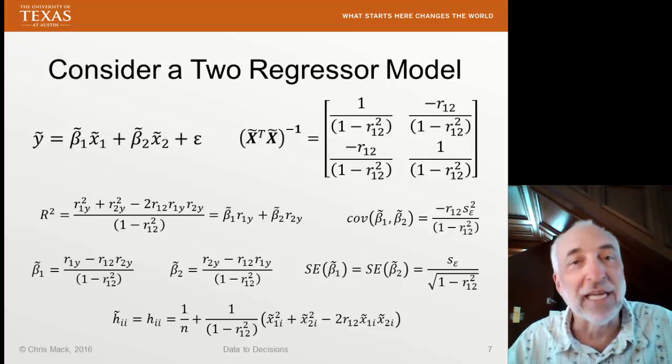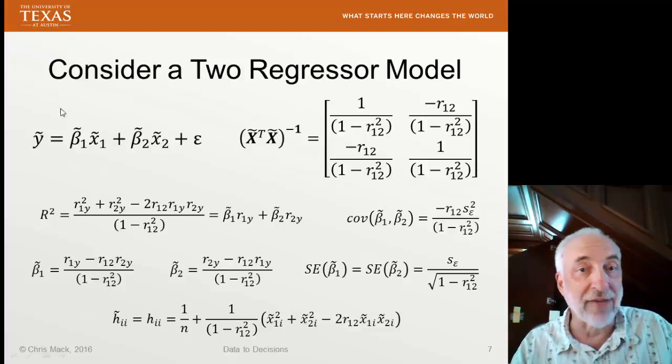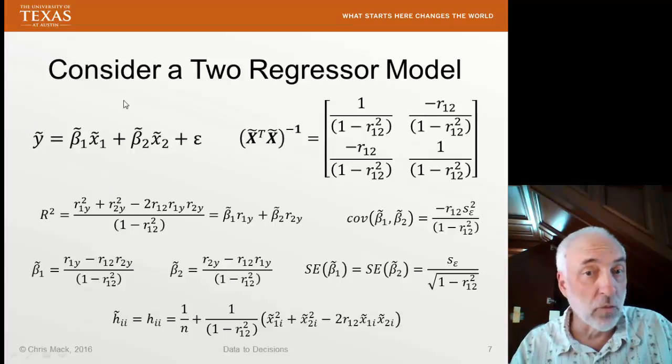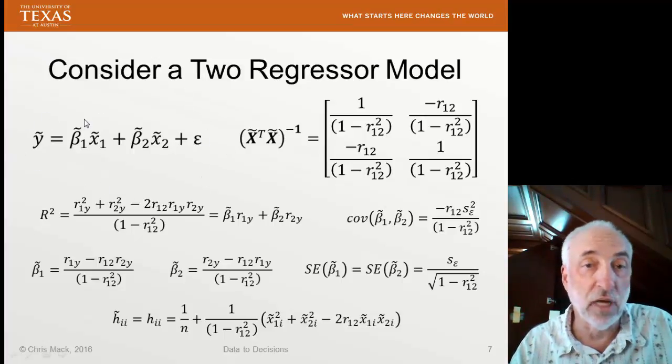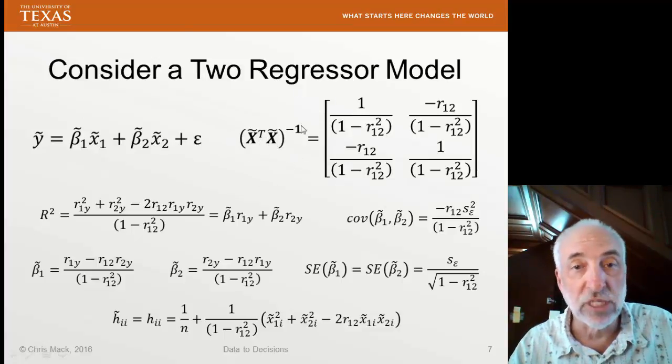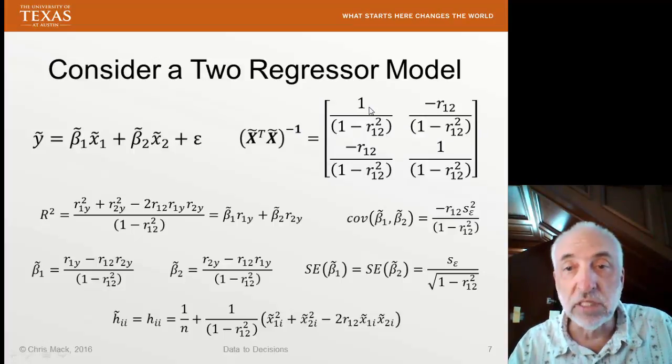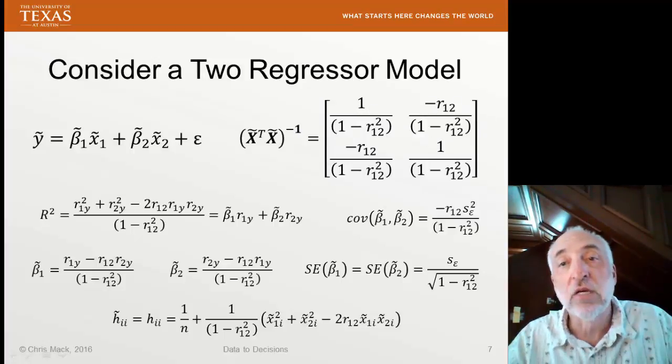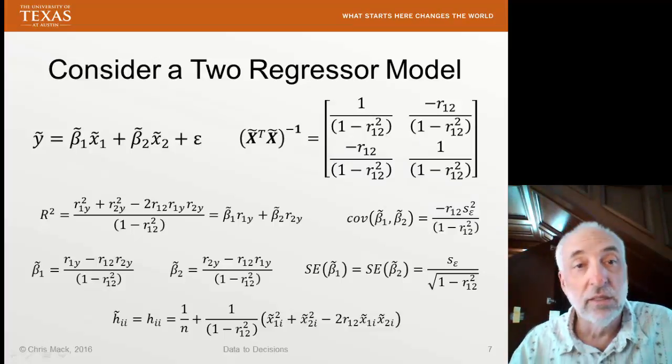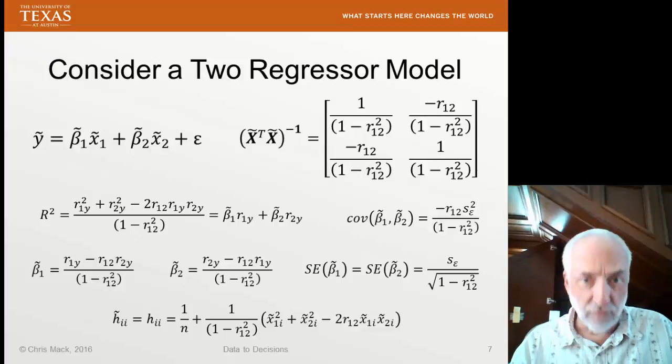Let me give you an example of what it would look like if I had two regressor variables, just x1 and x2. Our model doesn't have an intercept term in it. It's in the standardized form. The inverse of x transpose times x, which is how we get most of our solutions, you can see is a function only of the correlation between variables 1 and 2, r12.